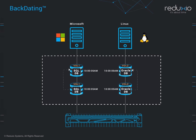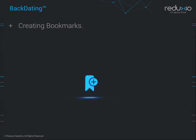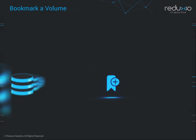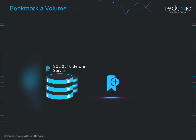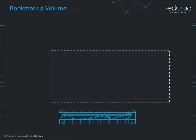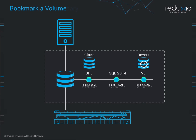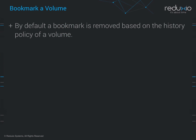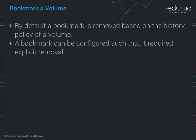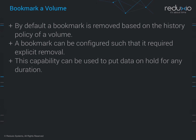An additional capability associated with backdating is bookmarks. Using a bookmark, you can tag any point in the history of a volume with a text label that is meaningful to you — for example, the state of a volume before a software upgrade. The bookmark can then be used to recover data by creating clones from, or reverting volumes to, the bookmark time. By default, a bookmark is removed based on the history policy of a volume. However, a bookmark can be configured such that it requires explicit removal. This capability can be used to put data on hold for any duration.